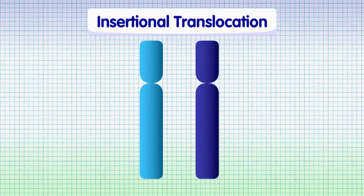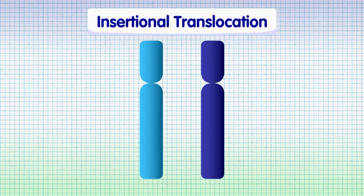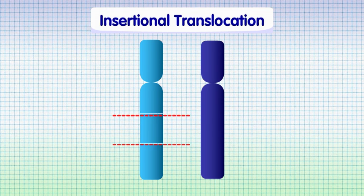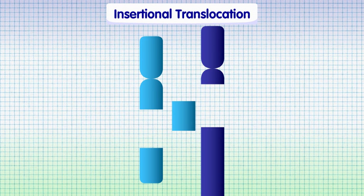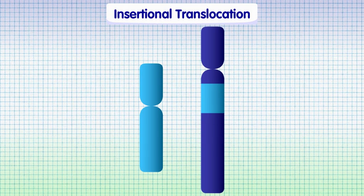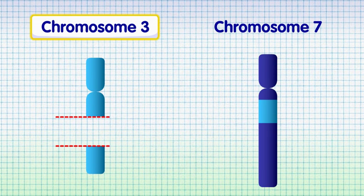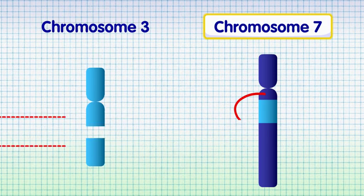An insertional translocation describes a situation where a piece of chromosomal material from one chromosome has become inserted into another. In this example, a chromosomal segment from chromosome 3 has been inserted into chromosome 7.